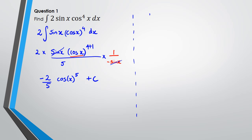With substitution, we've got the integral of 2 sine x · cos⁴x dx. I'm going to let u = cos x. The next step is finding du/dx — that equals negative sine x, because when you differentiate cos x you get negative sine x. The key thing when doing substitution is to get rid of everything with an x in your equation. We've got sine x, cos⁴x, and dx. What we could do is rearrange to get dx = du divided by negative sine x.